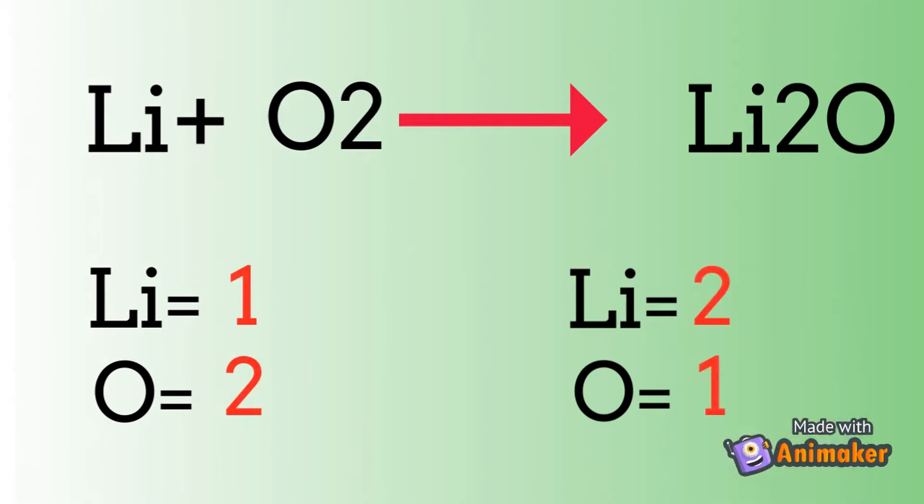The easiest way that I see to do that would be to put a 2 in front of the Li2O. Then I got to fix the oxygen. 1 times 2 that actually equals 2. So the oxygen are balanced.